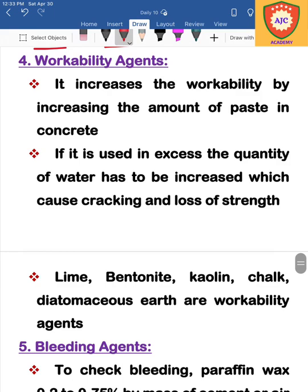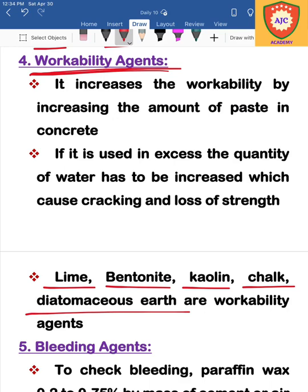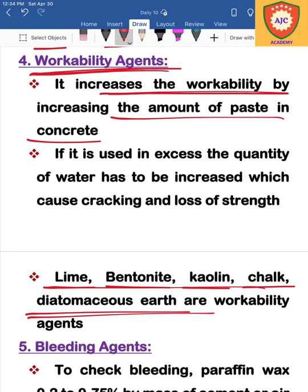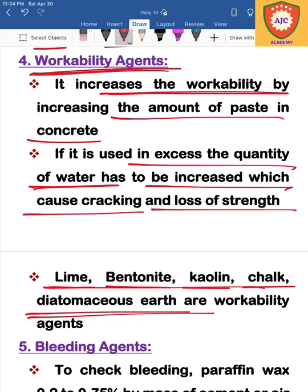The next admixture is the workability agent. We use the workability agent to increase workability. When we add the concrete mix with increased proportions, the workability improves. However, if mixed with more water, it can cause strength loss — that is a drawback of the workability agent.